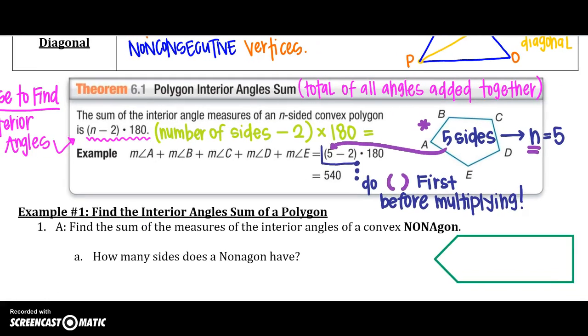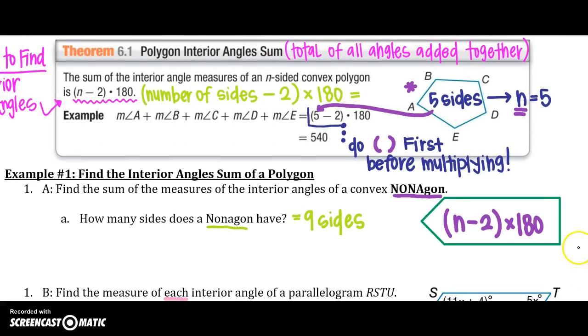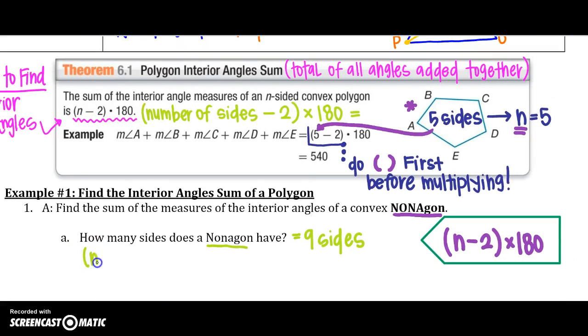We are going to get into our first example using the polygon interior angle sum. We need to find the sum of the measures of the interior angles of a convex nonagon. So the big thing is we are trying to find the interior angles. So we are going to know we need to use the number of sides minus 2, and then we are going to multiply it by 180 degrees. Before we start, we need to figure out how many sides a nonagon will have. Well, a nonagon has 9 sides. And if you need to recall the chart we used in a previous chapter, you might want to do so.